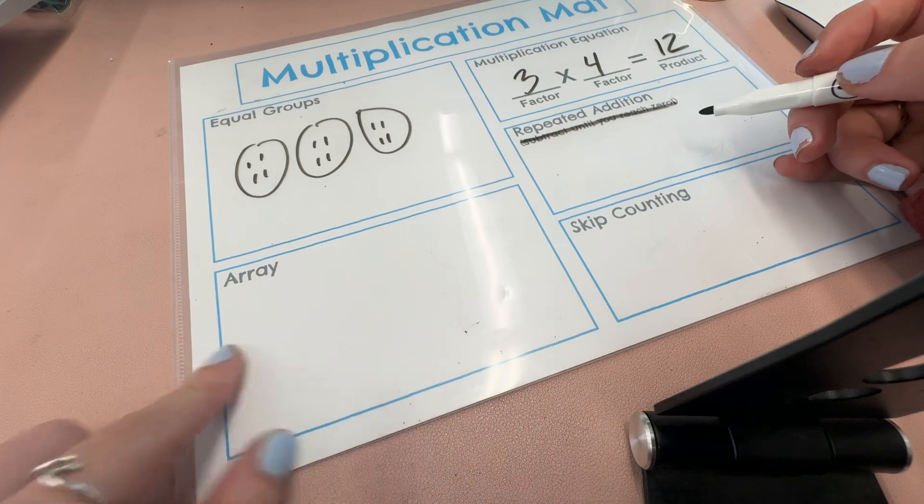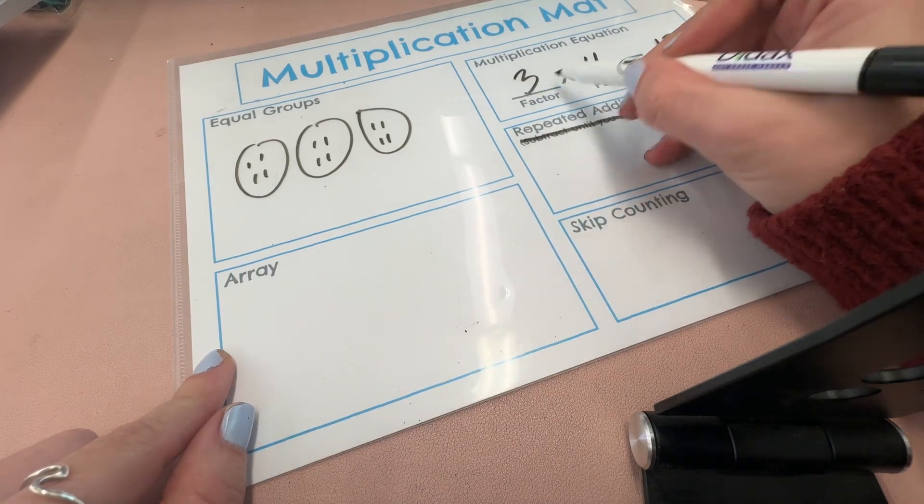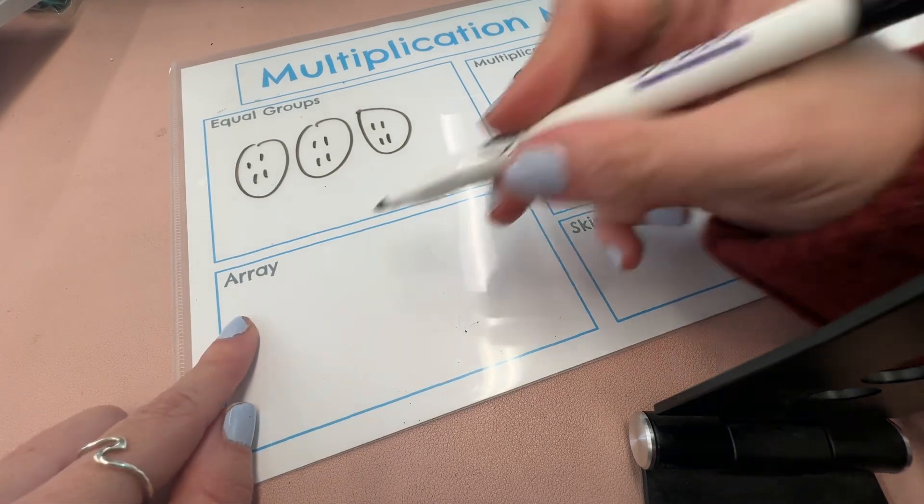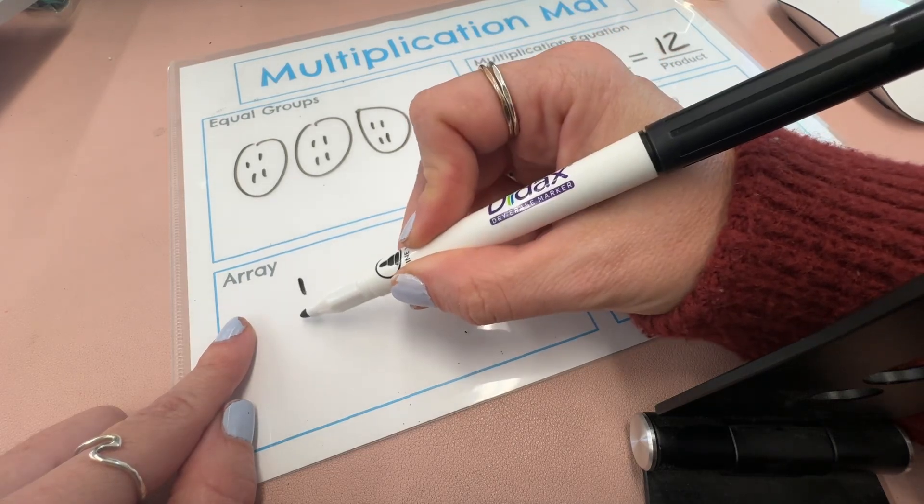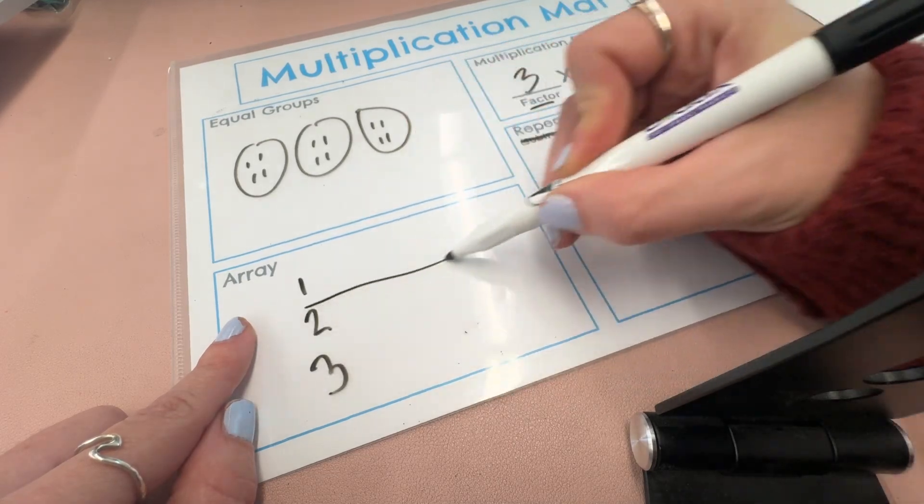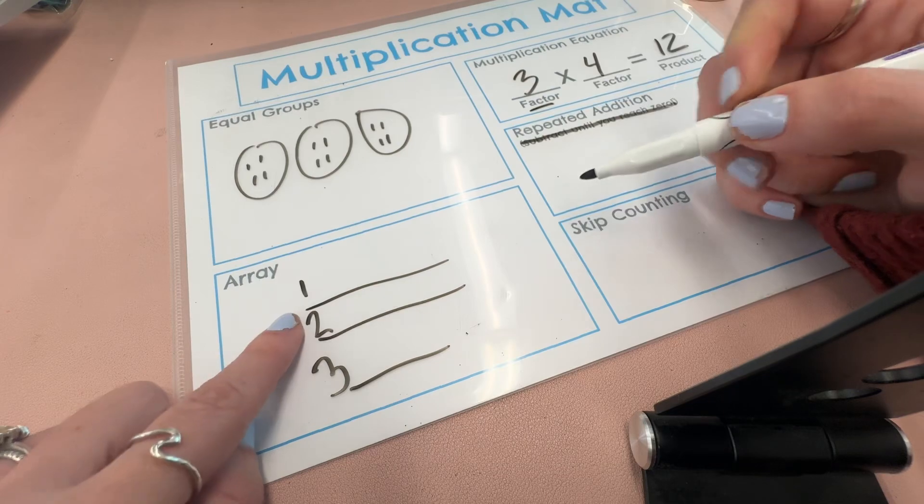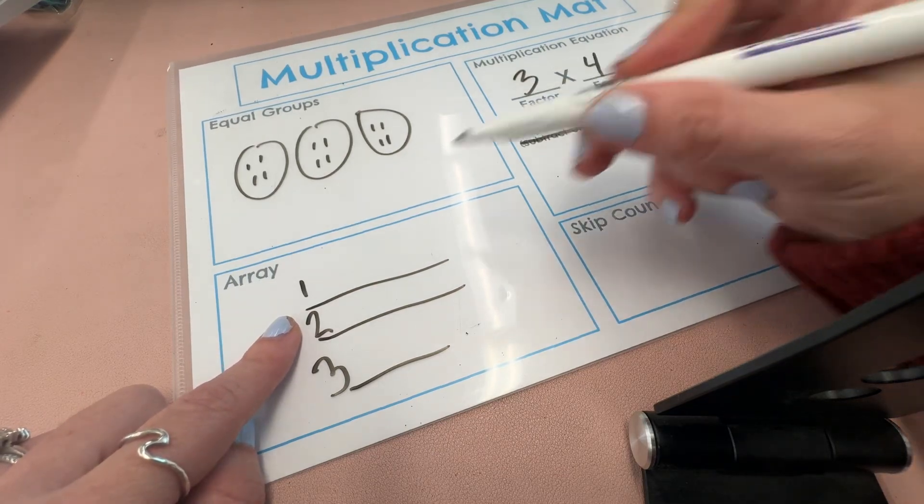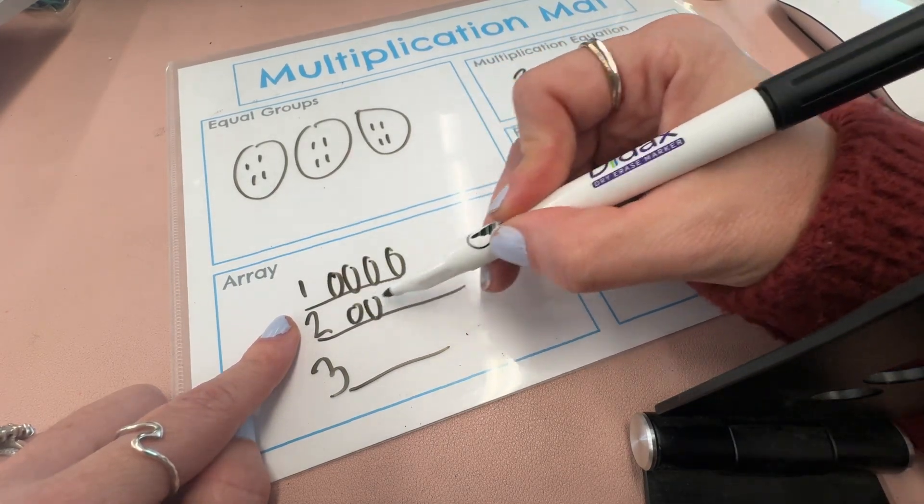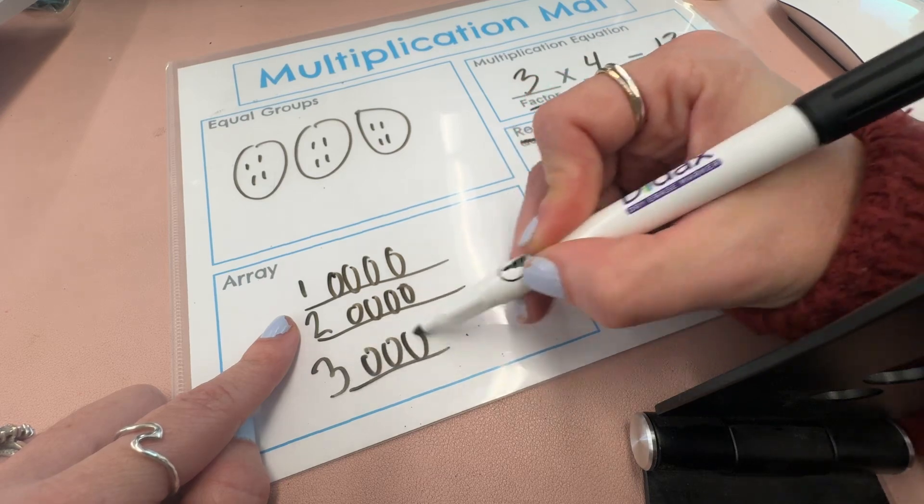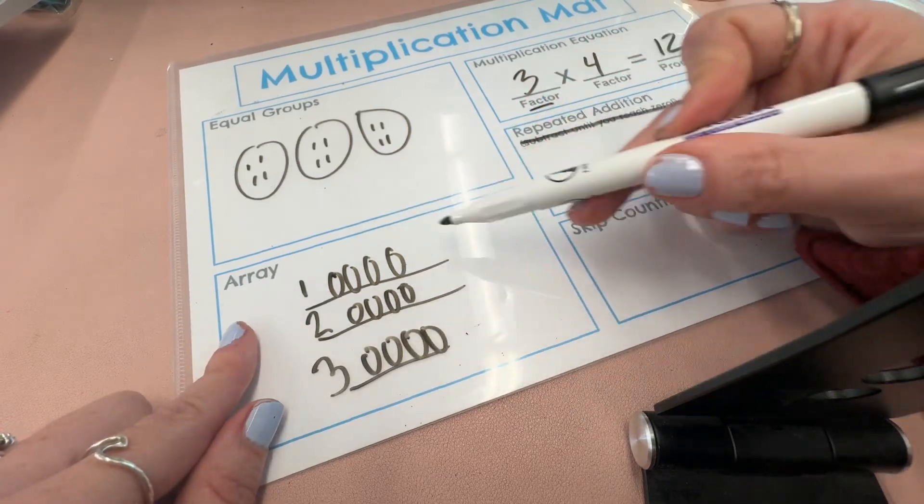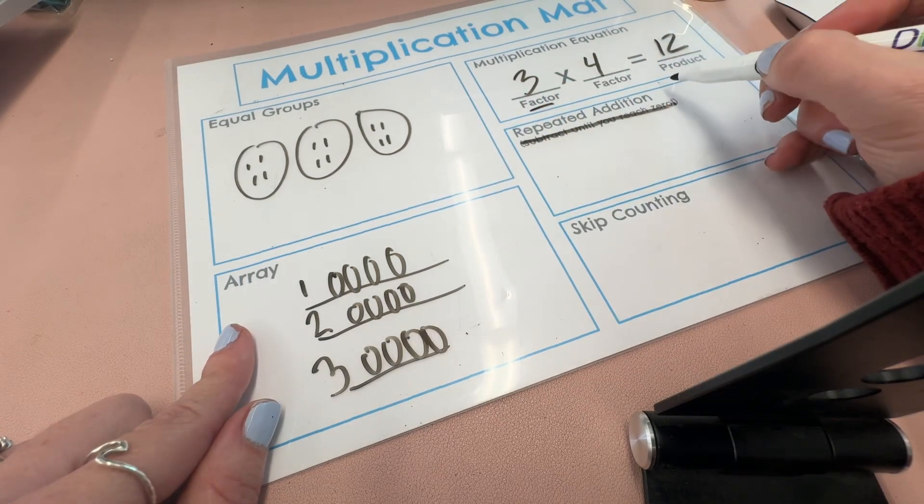Another way they could do it is by making an array. Our first factor tells us how many rows to create. So in an array, you need rows and columns. So you'd have one, two, three rows. And each row would contain four objects - one, two, three, four in each row. When they count up all of the objects, they would see it also equals twelve.